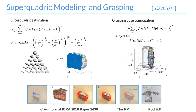We also represent the volume graspable by the hand with an ellipsoid. We then compute the grasping pose by overlapping the hand ellipsoid on the object's superquadric while meeting some constraints. In particular, we want to prevent the robot hand from hitting the table while grasping the object.